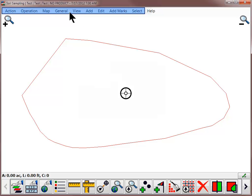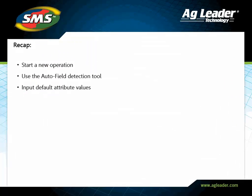Click OK after making all necessary changes to the default attribute values. The main operating screen of SMS Mobile will now open where you can begin creating new objects, editing existing ones, and navigating to any necessary points within the field. You have now learned how to start a new operating mode, use the automatic field detection, and input default attribute values. Please review the other tutorials to learn how to utilize other key features of the software.